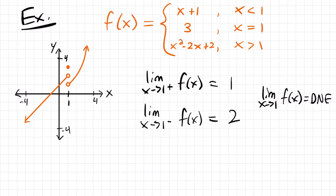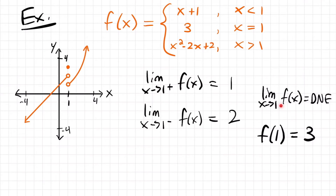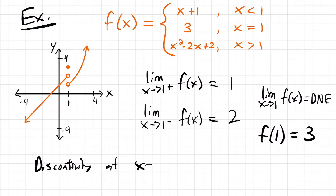That is very important in determining that there is a discontinuity at x equals 1. Not to mention that the value of the function at 1 is equal to 3. We actually have a value for this x, and it's 3. So not only do the limits not agree from either side, but the limit as x approaches 1 — which doesn't exist — is not the same as the value at that point. So x equals 1 is discontinuous for sure.